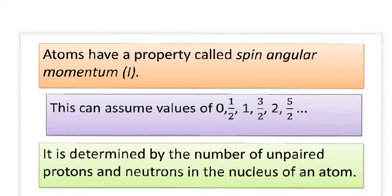And that value is determined by the number of unpaired protons and neutrons in the nucleus of an atom. And if that value has a half in it, so half, 3 over 2, 5 over 2, then that means you can get an NMR spectra from that atom.